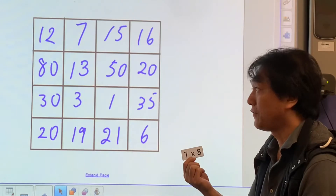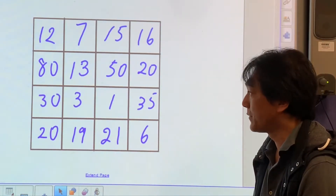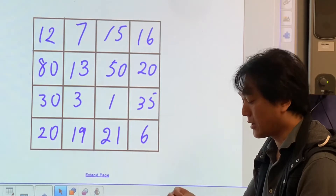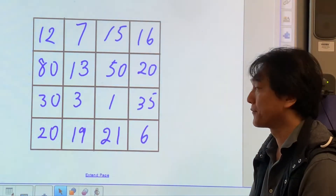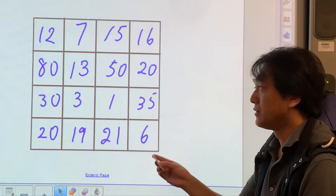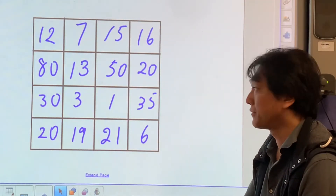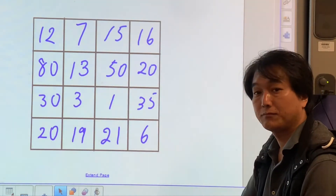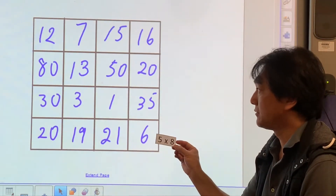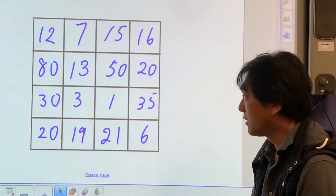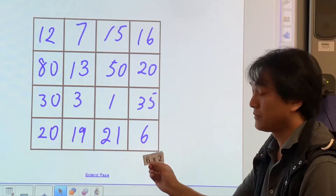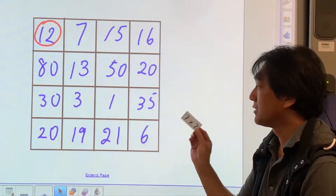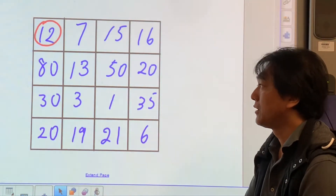7 times 8 is 56 — I don't have it. If you have 56, circle the number. 4 times 0 is 0 — I don't have 0. 0 times 2 is 0. 2 times 9 is 18 — I don't have it. 5 times 8 is 40 — I don't have it. 6 times 2 is 12 — I have it! 7 times 2 is 14. I'll stop this game now.